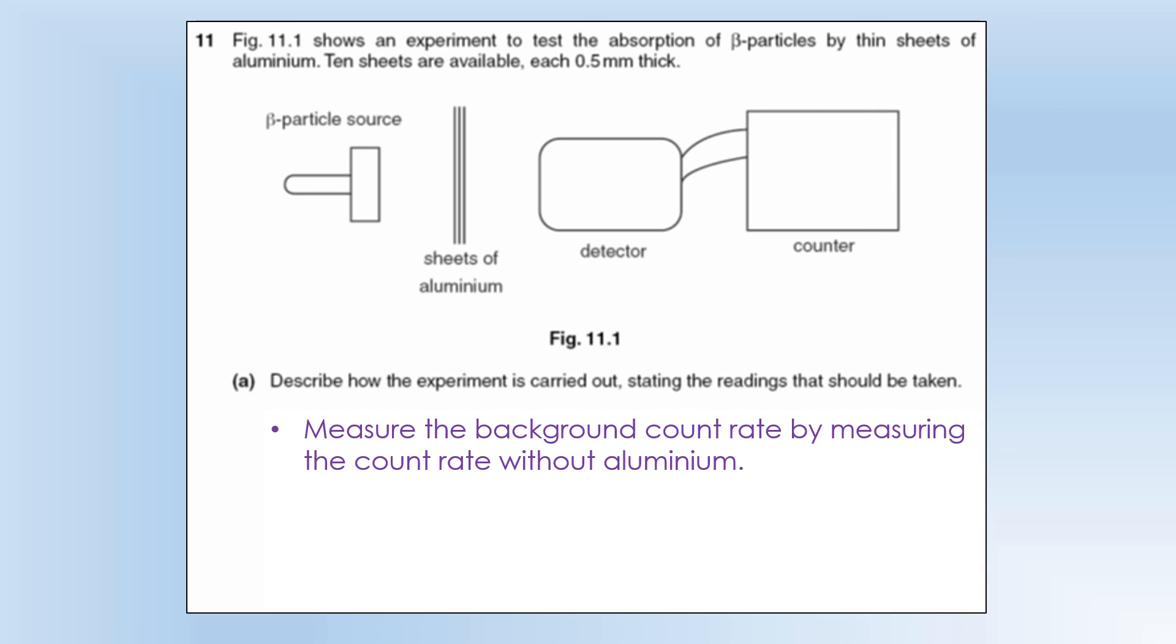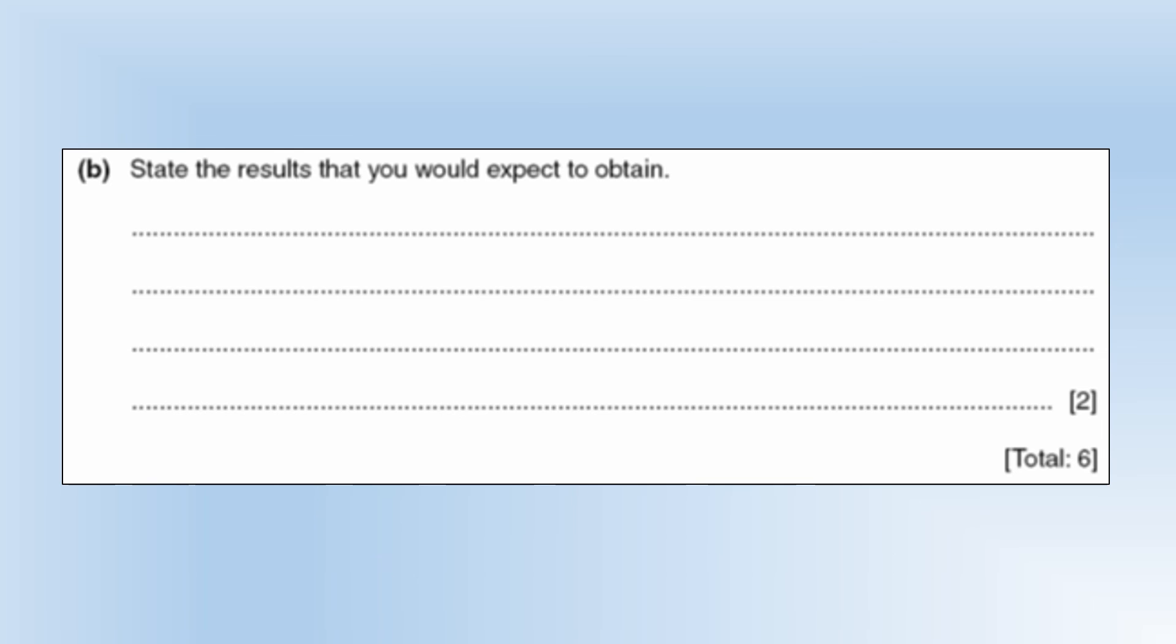Well, the first reading that needs to be taken is measuring background, so you take a measurement without any aluminium at all and without the source as well, actually. And then you'd measure the count rate with aluminium and subtract the background count rate. Okay, because that tells you how much the count rate from the source.